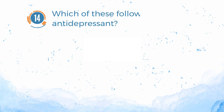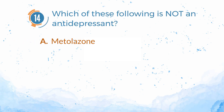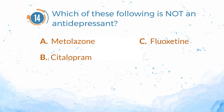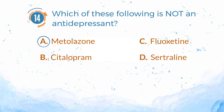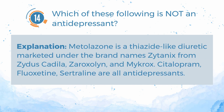Number 14. Which of the following is not an antidepressant? A. Metolazone. B. Citalopram. C. Fluoxetine. D. Sertraline. The answer is A. Metolazone. Explanation: metolazone is a thiazide-like diuretic marketed under the brand names Zaroxolyn, Zytanix, and Mykrox. Citalopram, fluoxetine, and sertraline are all antidepressants.